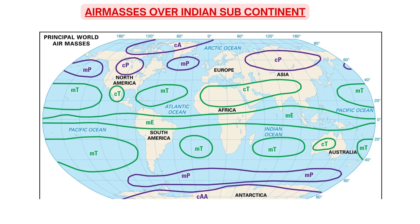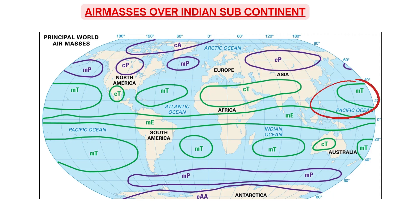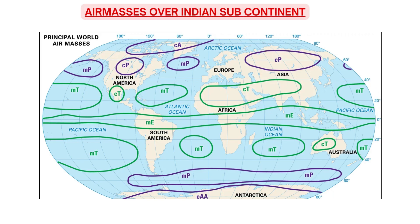The second is Tropical Continental, which gives cold and dry weather — it is the most common air mass in winter, producing fair weather and poor visibility. The third is Tropical Maritime, which originates over the north Pacific Ocean and arrives over India crossing southeast Asian countries. Very occasionally, Polar Continental air mass also enters India in winters, causing cold wave conditions.